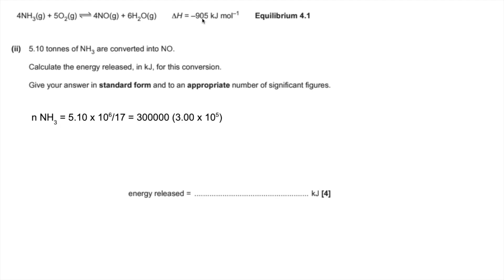905 kilojoules are released. So 1 mole of ammonia would release a quarter of that, which is 226.25 kilojoules.